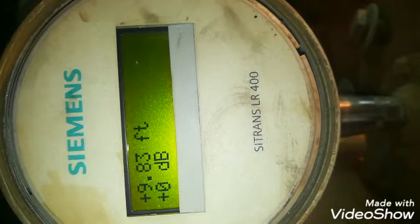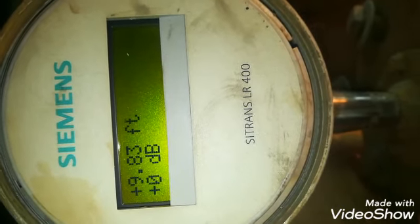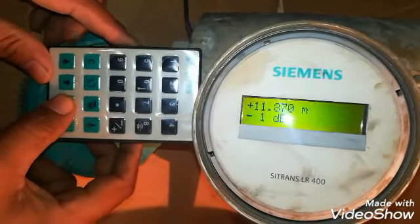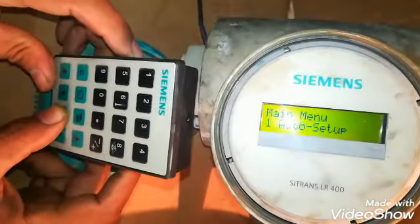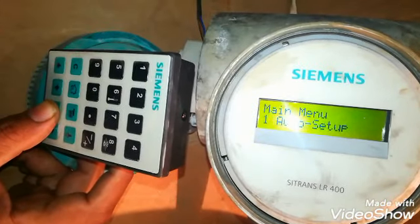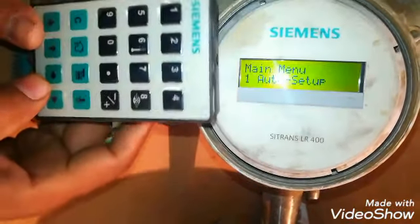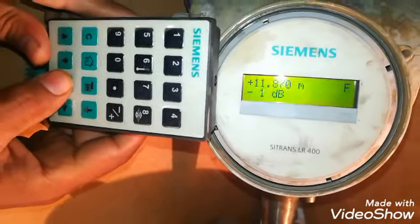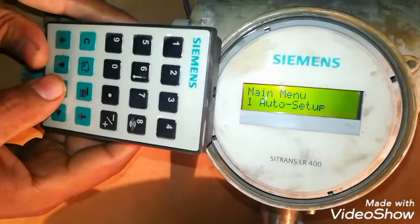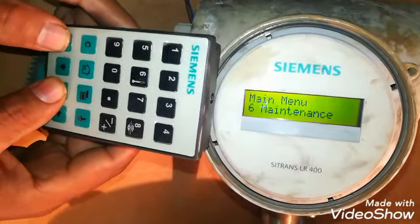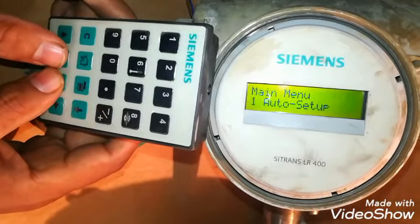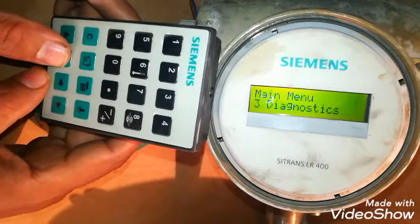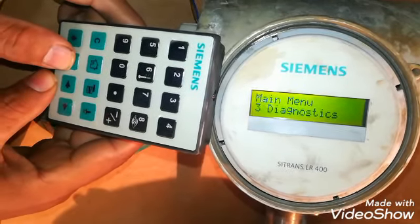Here you can see it's showing plus 9.83 feet and its dB is minus 1. So from a distance we can communicate with this. With the left button we can go into the parameters. So I will press the left button. Here is the main menu. First is auto setup, second is display, the third block is diagnostics.